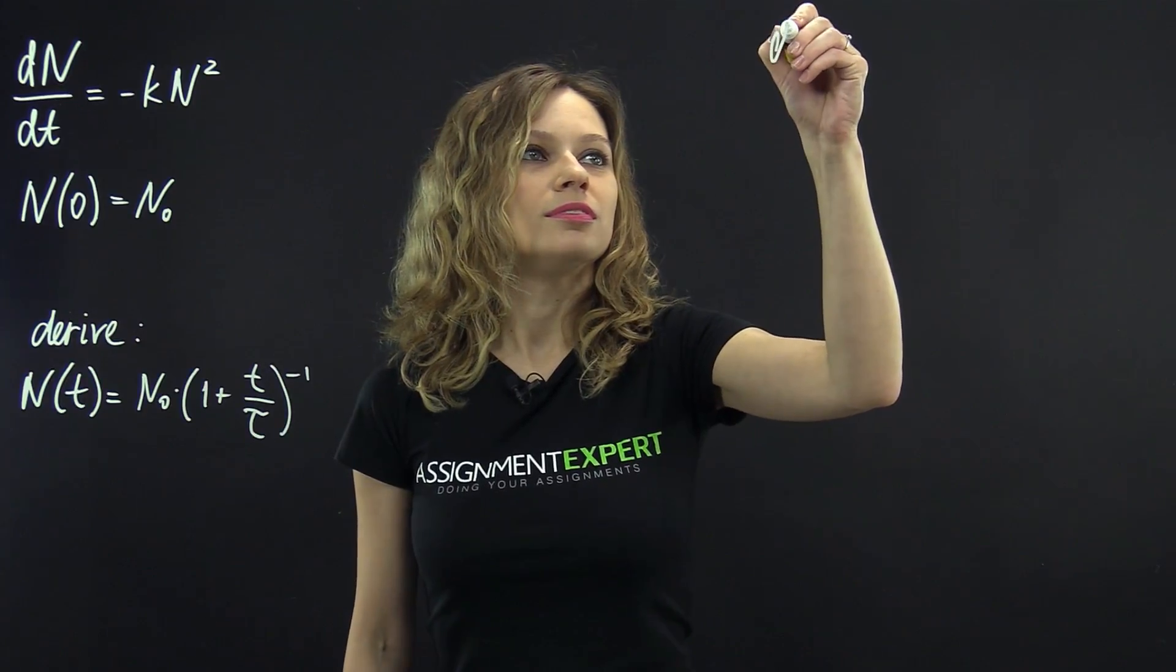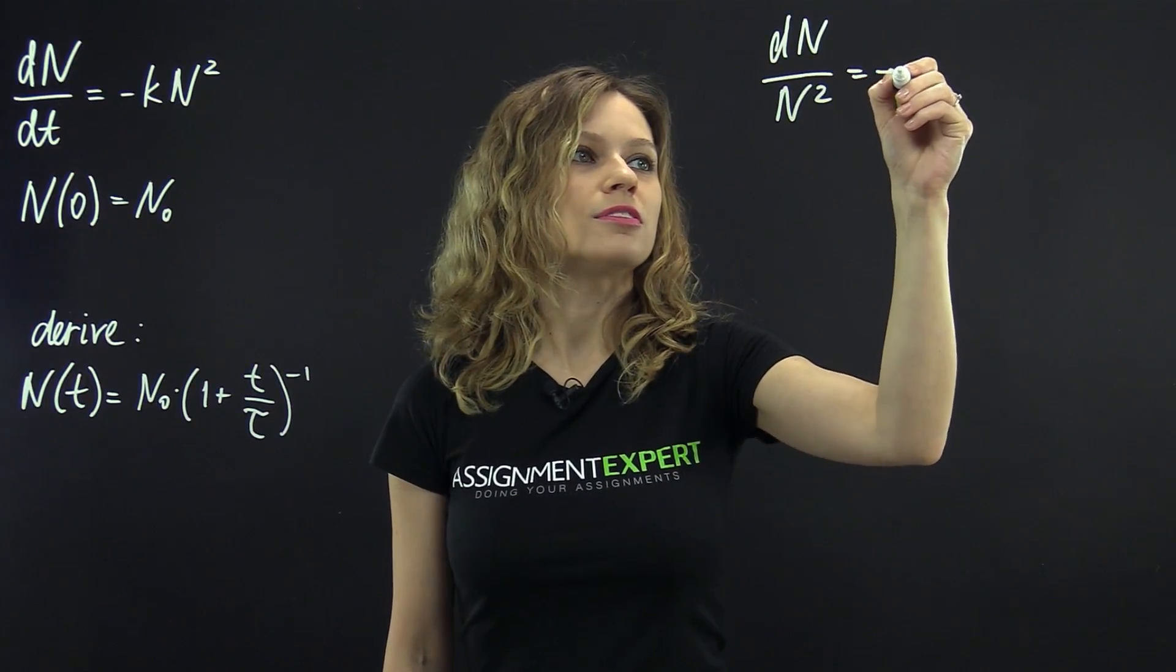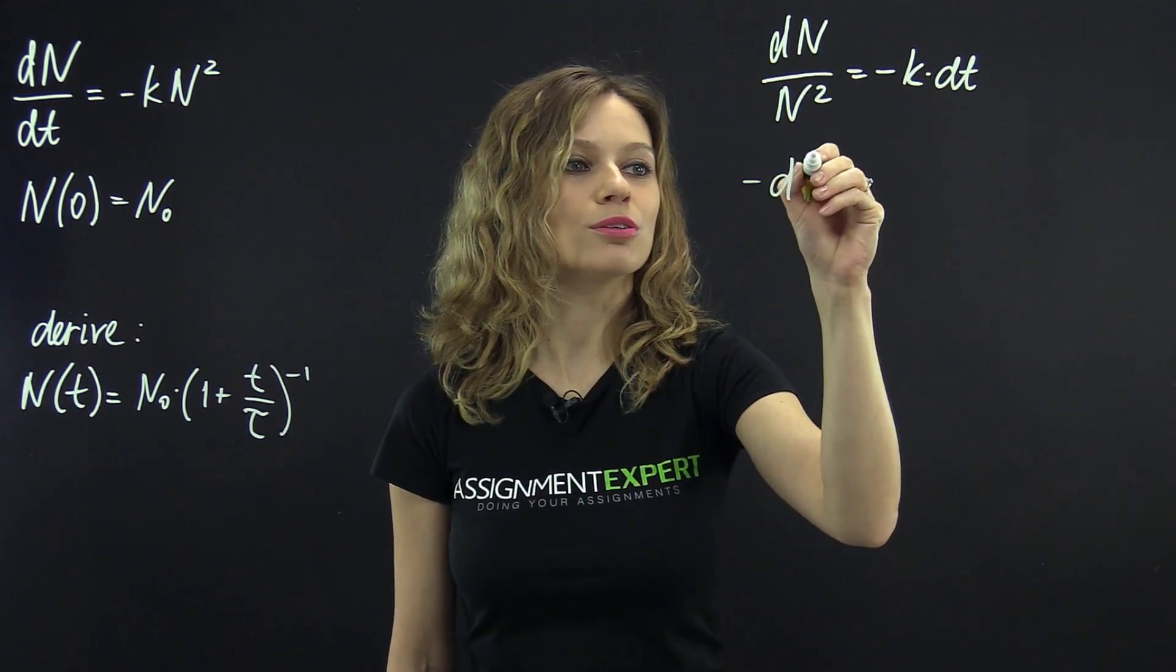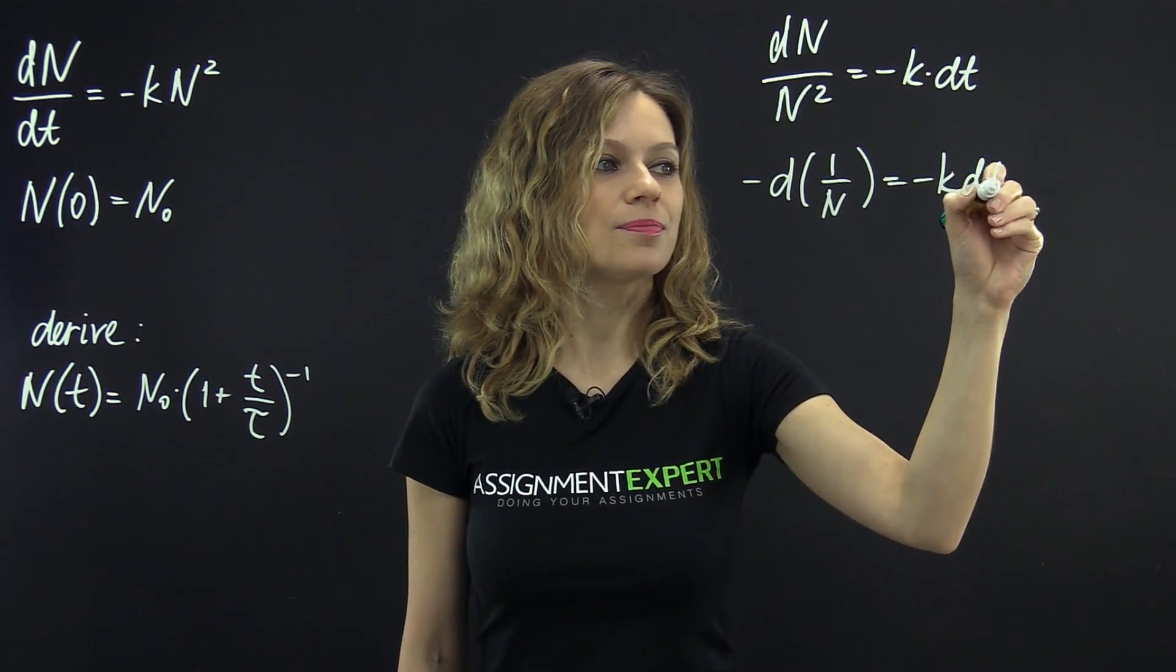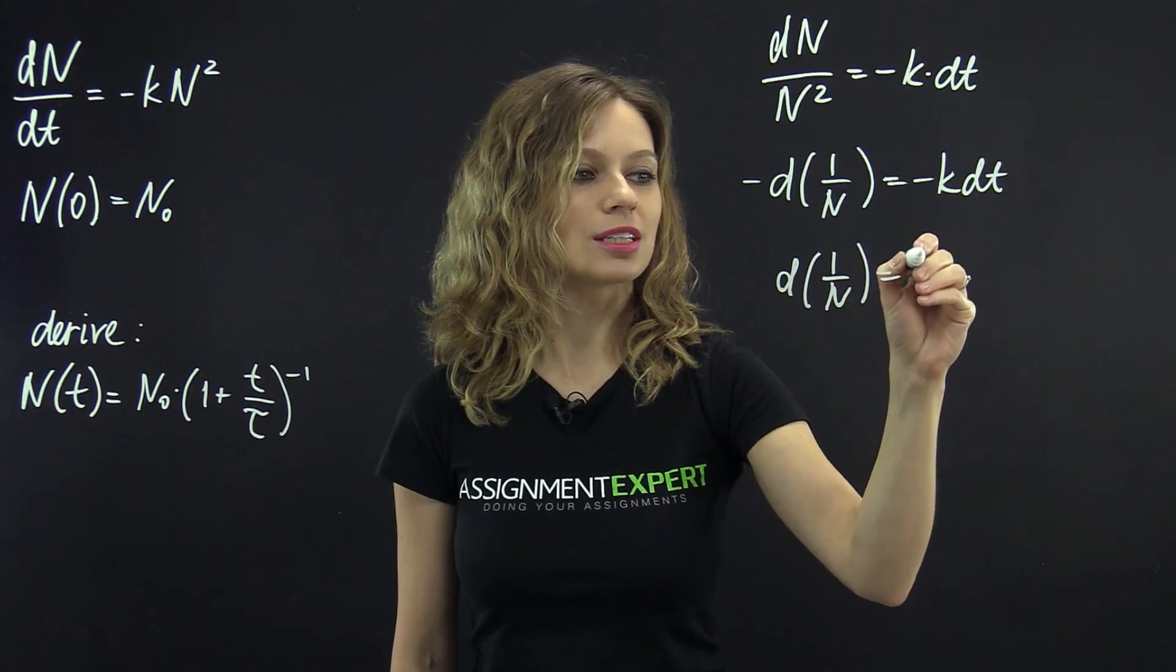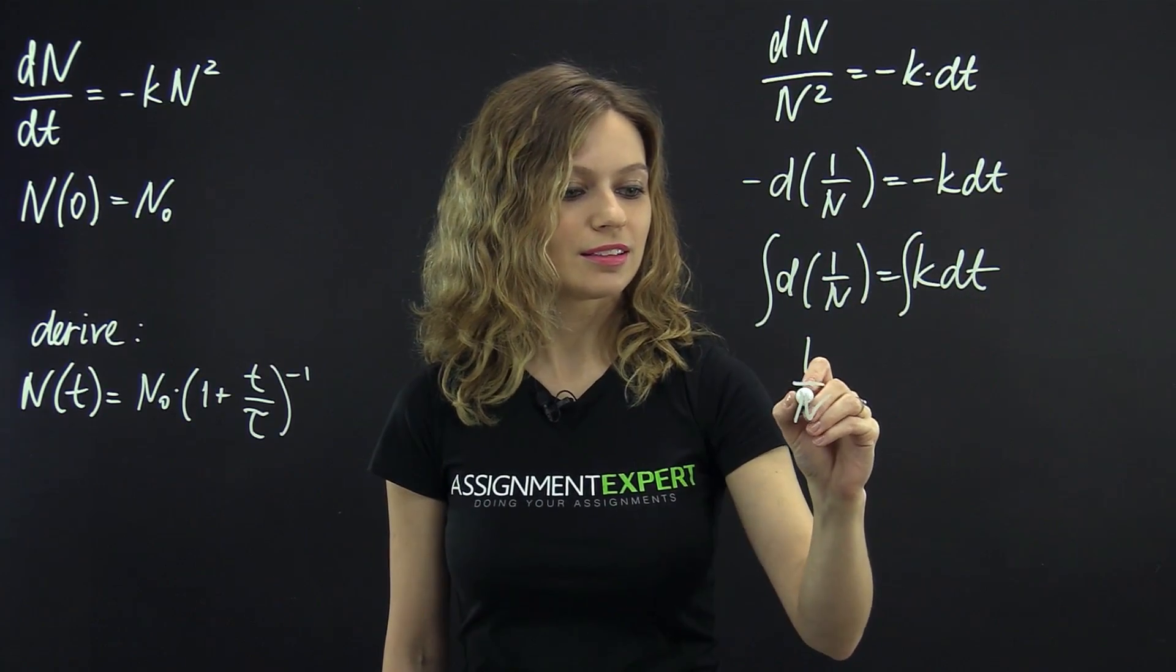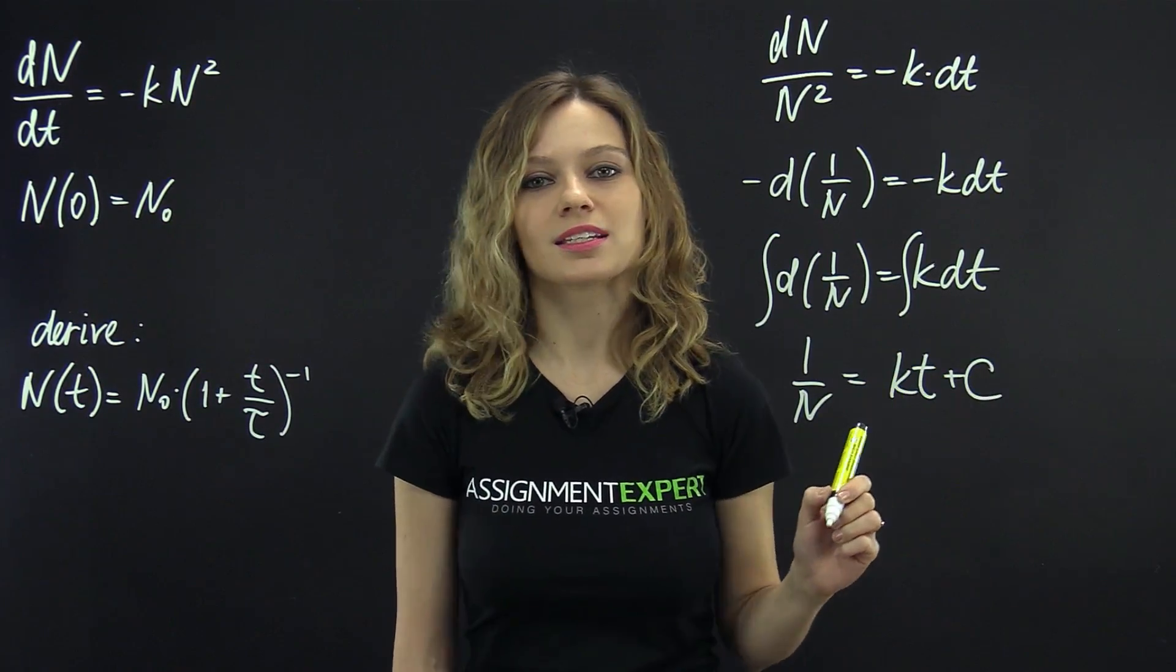We have dN over N squared equals negative k times dt. We can put 1 over N squared under the differential sign. We'll have negative d of 1 over N equals negative k dt. We can lose the minus sign. We'll have d of 1 over N equals k times dt plus c, where c is the integration constant.